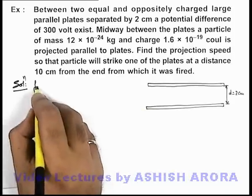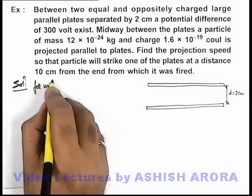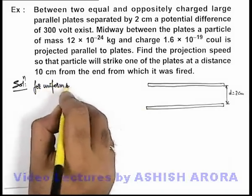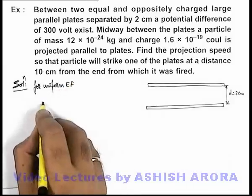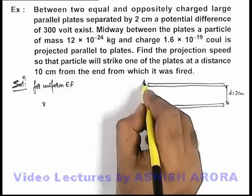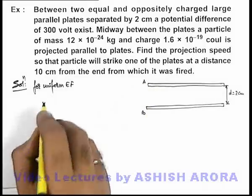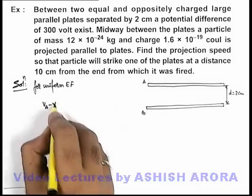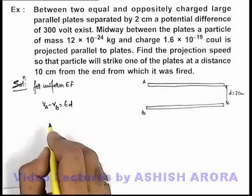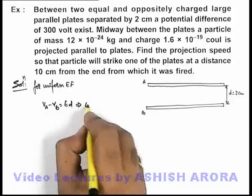We know for a uniform electric field, we can write the potential difference. If these plates are A and B, then potential difference V_A - V_B we can write as Ed.